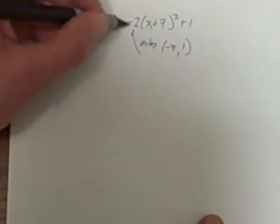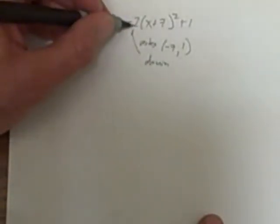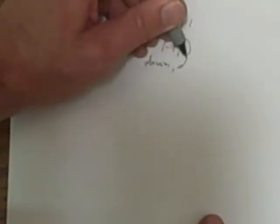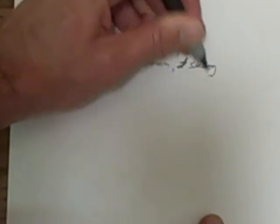And then another thing, notice that negative 2, that means it's also going to be going down, and it's going to be multiplied by 2, its growth rate. So that means it's going to be skinny because it's going to be growing faster than if it was just multiplied by 1.